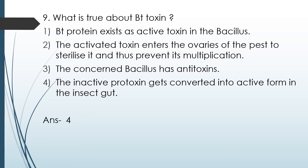The Bt toxins are released because of the Bt gene that the plant now contains. However, this toxin is produced as an inactive form in the plants. Once the insect eats a part of the plant containing this toxin, it goes to the gut of the insect and gets activated there because of the alkaline nature of the insect gut, and once activated, it kills the insect. That's how the Bt toxin acts.